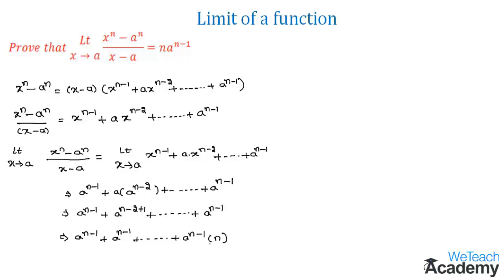So this we can write as n into a power n minus 1. Therefore we can conclude that limit x tends to a of x power n minus a power n divided by x minus a equals n into a power n minus 1. This is how we prove the theorem.